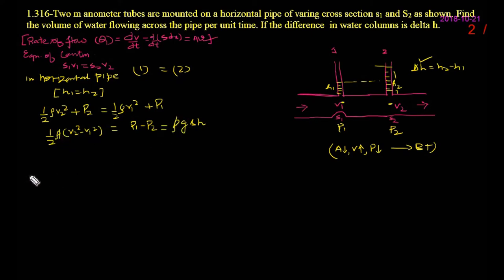Now, rho will cancel out. And what will you get? Let's see, that will be half V2 square minus V1 square is equal to G delta H. This is supposed that equation 1.